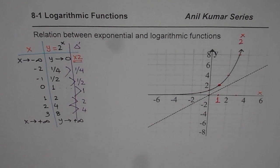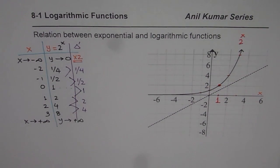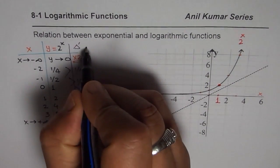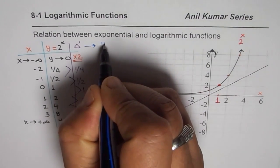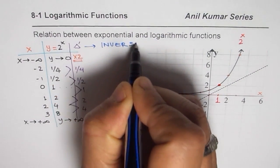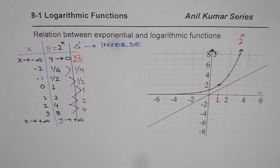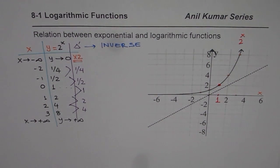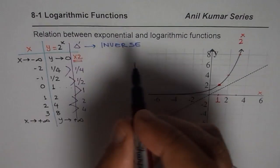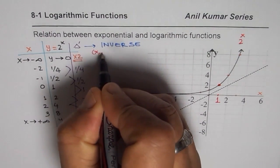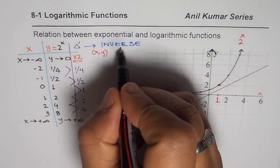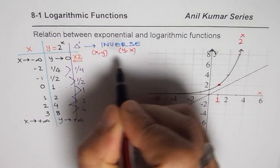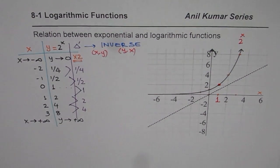We've established this is the exponential function 2^x. The real topic now is to find the inverse of this exponential function. One way to find the inverse is a graphical approach: if (x, y) are coordinate values for the function, we can flip them to get the values for the inverse of the function.